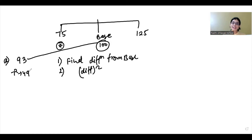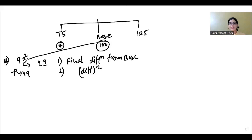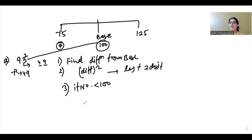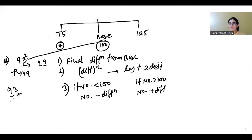You have difference 7, so find the difference square: 7 squared is 49. The last two digits of the difference square become the last two digits of the answer. Now, since the number 93 is less than 100, we do number minus difference: 93 minus 7 equals 86. So the answer for 93 squared is 8649.